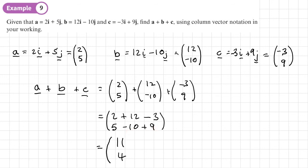So we end up with 11, 4. Now, if we use the I J notation, then we would have got 11I plus 4J, which we can see is equivalent.